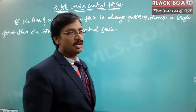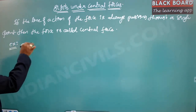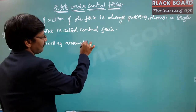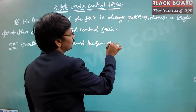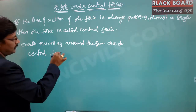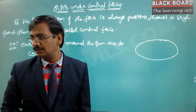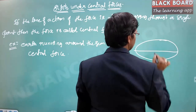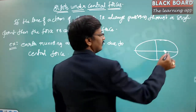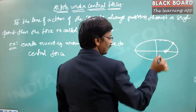The most popular example is the Earth running around the Sun due to central force. If the planet is rotating in an elliptical orbit, this is the major axis, this is the minor axis, and this is the focus of the ellipse. If the Earth is located here, the line of action of the force is always attractive towards the Sun.